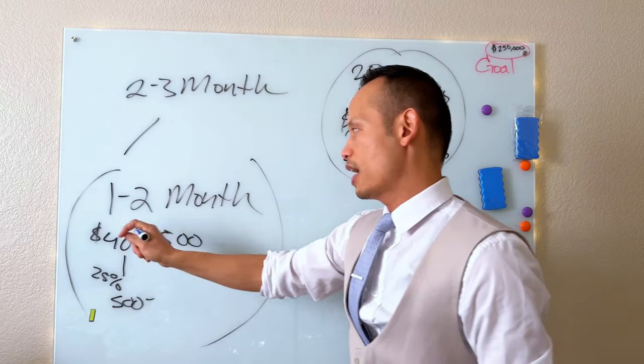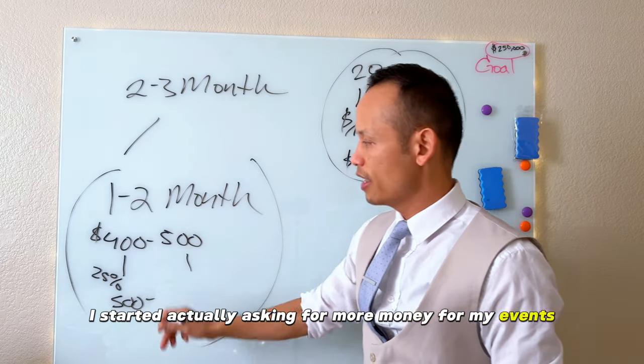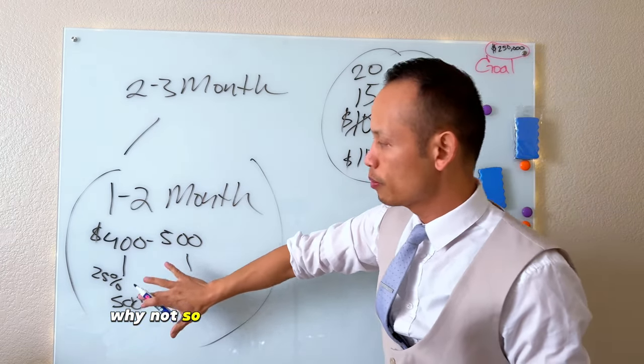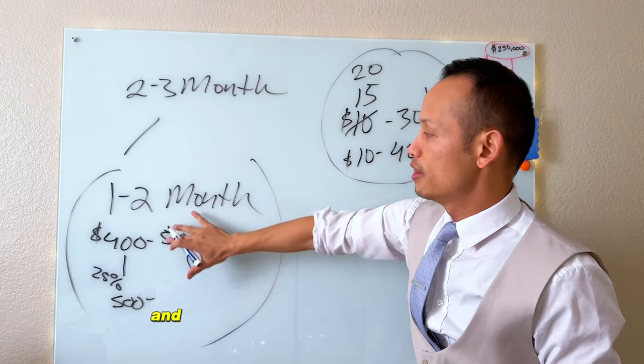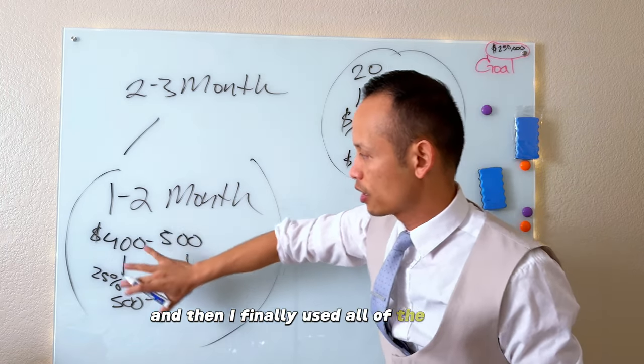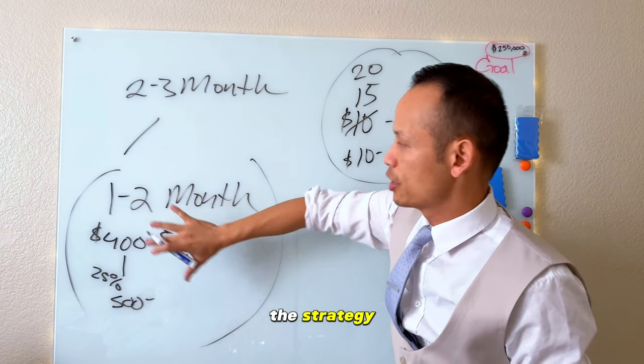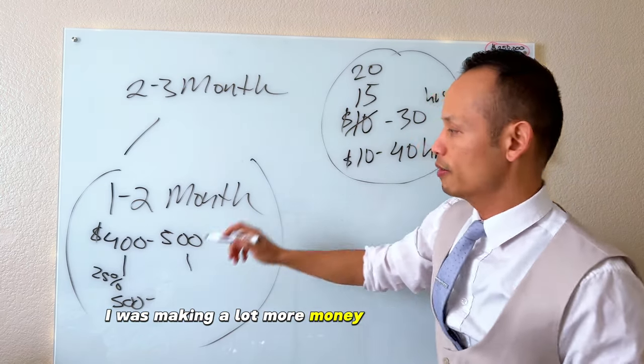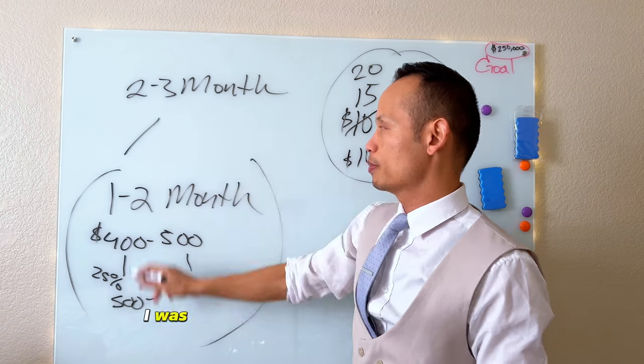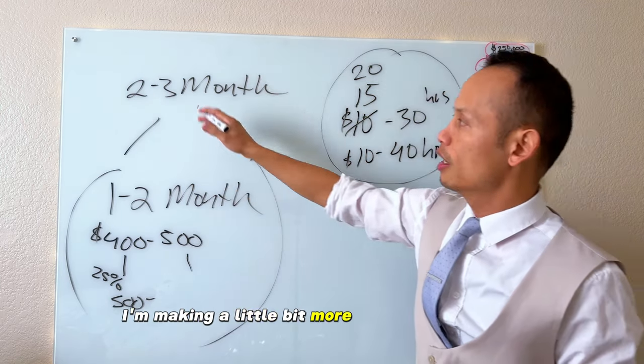So back to this concept right here, because I wanted to use this to simplify it. This is exactly what I did, guys. I started actually asking for more money for my events. Why not? So by the time I actually had this going on and then I finally used all of the content, the learnings, the experience, the strategy, then when I started getting two to three events a month, I was making a lot more money because on minimum I was making $500 an event.